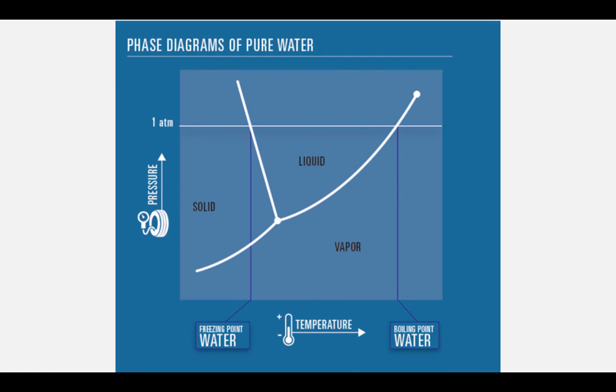Let's look at the phase diagram of water again. Water's normal boiling and freezing points happen above the triple point temperature and pressure. This means that water does not sublime at room temperature and pressure. Instead, water goes from a solid to a liquid to a gas as the temperature is raised at 1 atm.